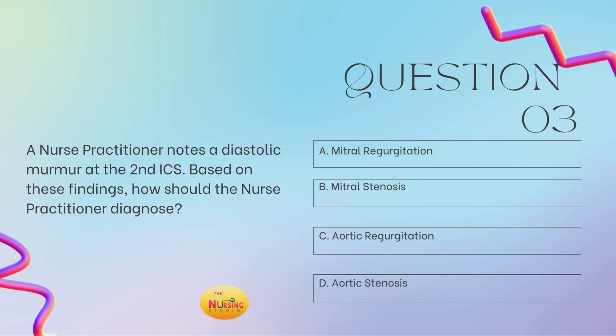And then lastly, question number three: a nurse practitioner notes a diastolic murmur at the second intercostal space. Based on these findings, how should the nurse practitioner diagnose? Is it A, mitral regurgitation; B, mitral stenosis; C, aortic regurgitation; or D, aortic stenosis? Take a moment — tell me what you got.